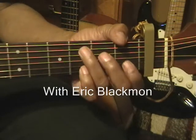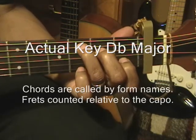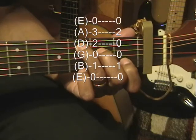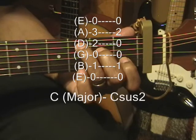Our first chord is C major, formed this way. We have a finger on the first fret, the B string, second fret, the D string, and the third fret, A string.